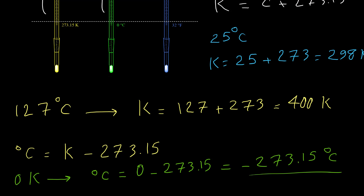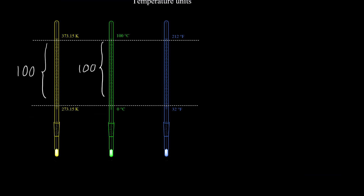Now let's look at Fahrenheit. The size of the degree in Fahrenheit is different. The freezing point of water is 32°F and the boiling point is 212°F, giving a difference of 180 degrees between them. So we cannot simply add a number to convert Fahrenheit to Celsius or vice versa.